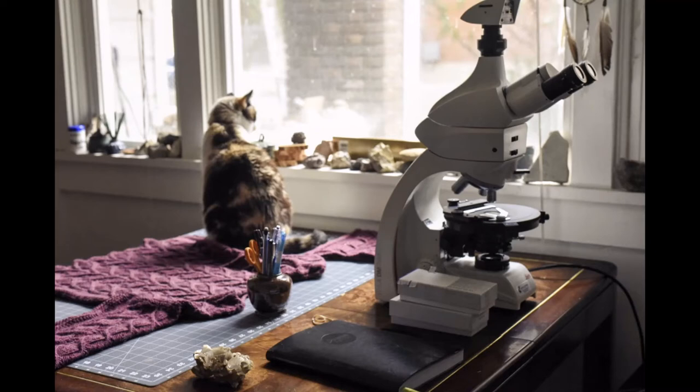One of the tools geologists use is a petrographic microscope. We use the microscope to look at small-scale structures within a rock, and we also use it to determine mineralogy.